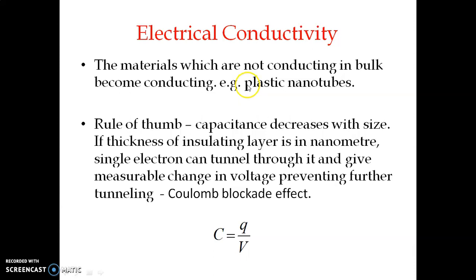To summarize electrical properties: first, there is a change in conductivity at nanoscale — for example, plastic nanotubes. Second is the Coulomb blockade effect: when the insulating layer of a capacitor is very thin at the nanometer scale, single electron tunneling develops a large voltage that prevents further tunneling of electrons.